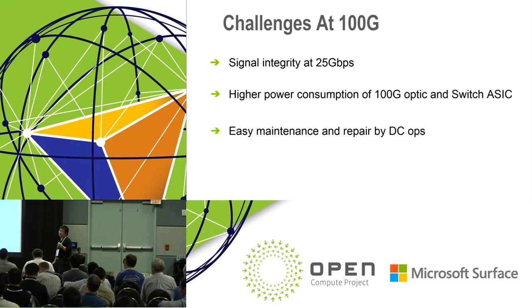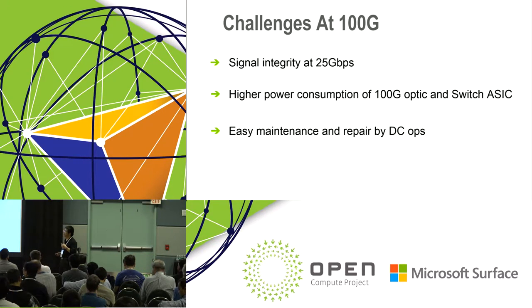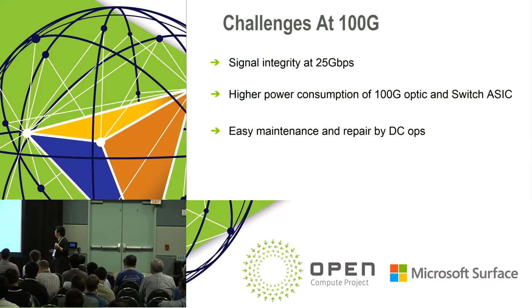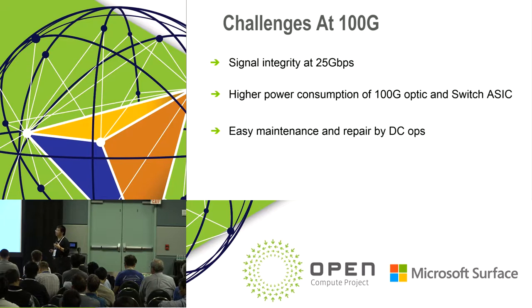The first challenge is that signal integrity is much more difficult than at 40-gig. The physical speed is now 25 Gbps, whereas the previous generation was only 10 gig — about 2.5 times faster. So we have to optimize for signal integrity. The second challenge is that the switch ASIC and optics have much higher power consumption than in the 40-gig era. The switch ASIC Tomahawk is close to 200 watts maximum, and the 100-gig optics are close to 3.5 watts versus roughly 1 watt for 40-gig — more than three times the power increase for optics. So we have to design the chassis to optimize for thermal.